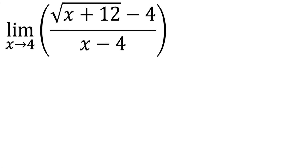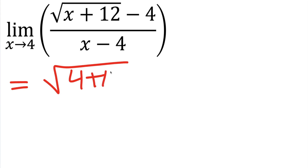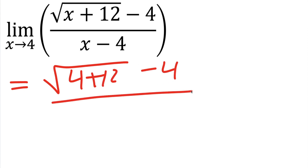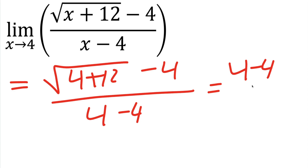In this video we are going to solve this limit problem. The first thing I like to do is straight plug in to see if it even works. So if I plug in 4, we would get the square root of 4 plus 12, outside is a minus 4, divided by 4 minus 4. We get 4 plus 12 is 16, and the square root of 16 is 4 minus 4, divided by 4 minus 4, which is 0 over 0. That's a big red flag — we probably need to do something different to approach this problem.